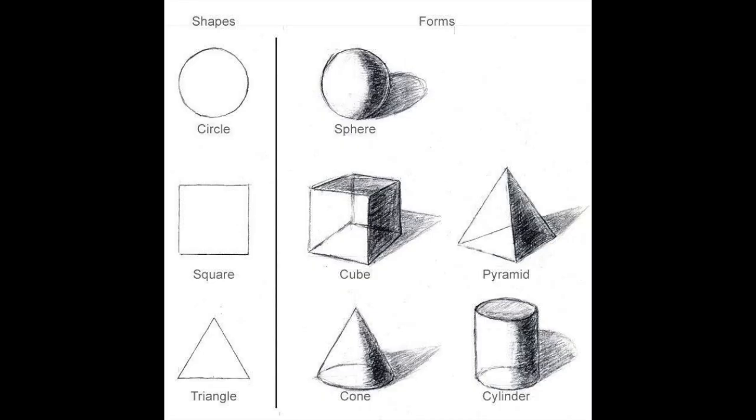So today we're going to utilize form, which is when we draw a 3D shape. We're going to decide on a light source and have a well-defined shadow on one side, just like Wayne Thiebaud does in his still life. We'll use shading to create the shadow with our pencil and let's get started.